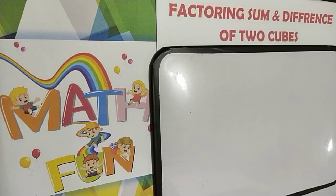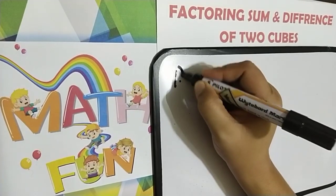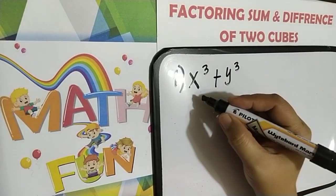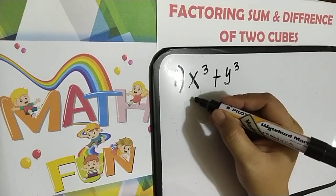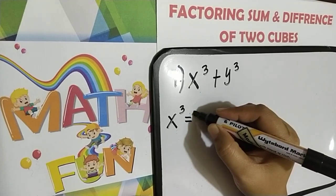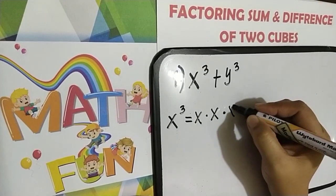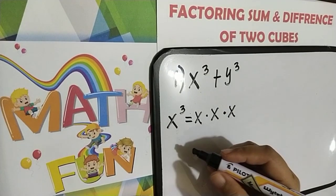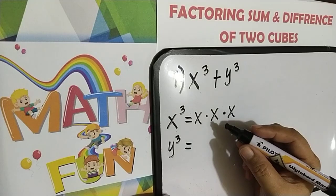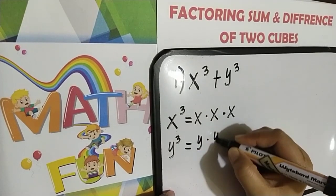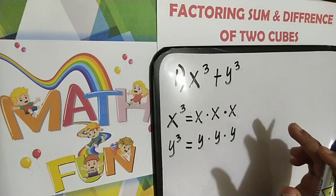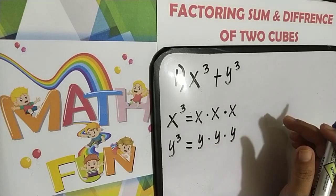Let's have example number one: x cubed plus y cubed. First, let's find the three equal factors of our first term. So the three equal factors of x cubed are x times x times x. And for the second term, y cubed, the three equal factors of y cubed are y times y times y. After getting the factors of each term, we can find now easily the factors of the two cubes.